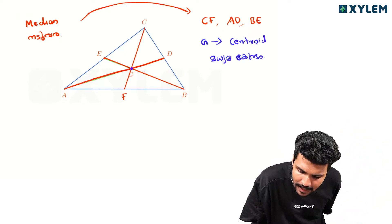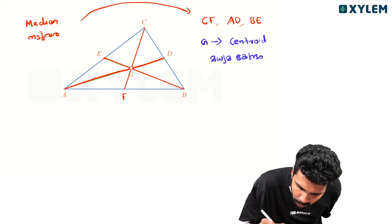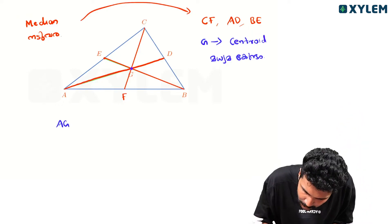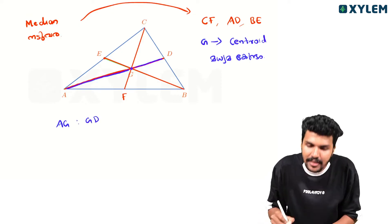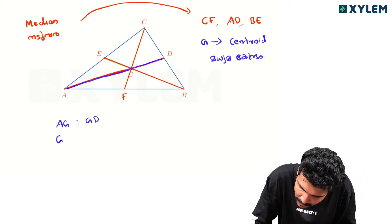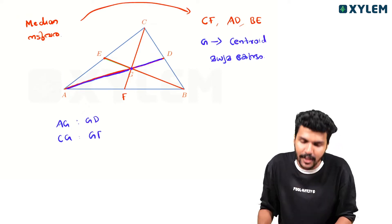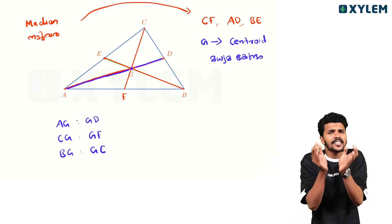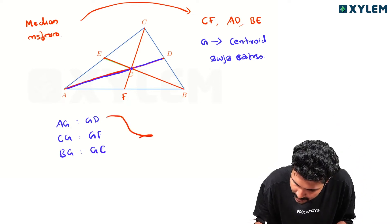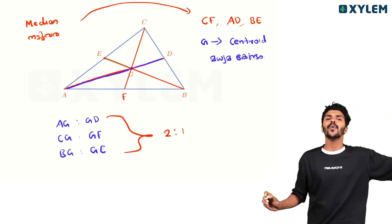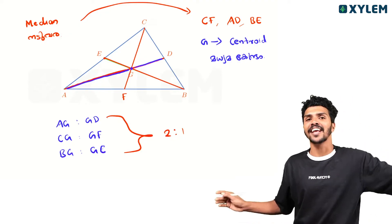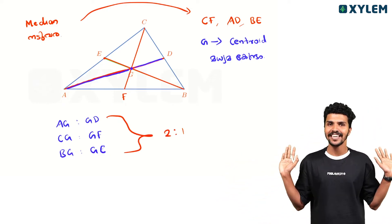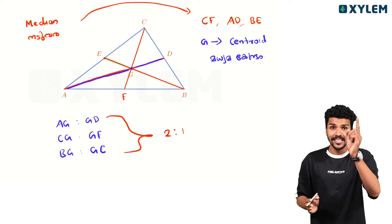Now, at this point where all medians meet, there are two questions. The segments are AG and GD, CG and GF, BG and GE. The ratio is 2 to 1. The centroid divides each median in the ratio 2:1. I am going to ask questions about this for 5 marks.